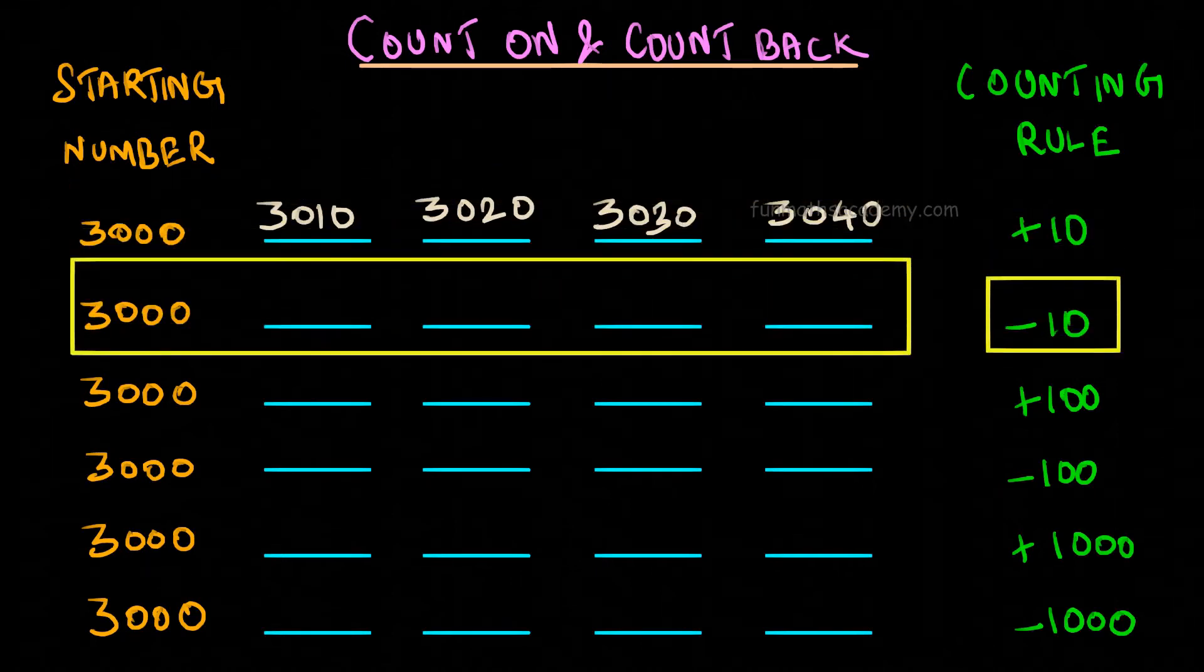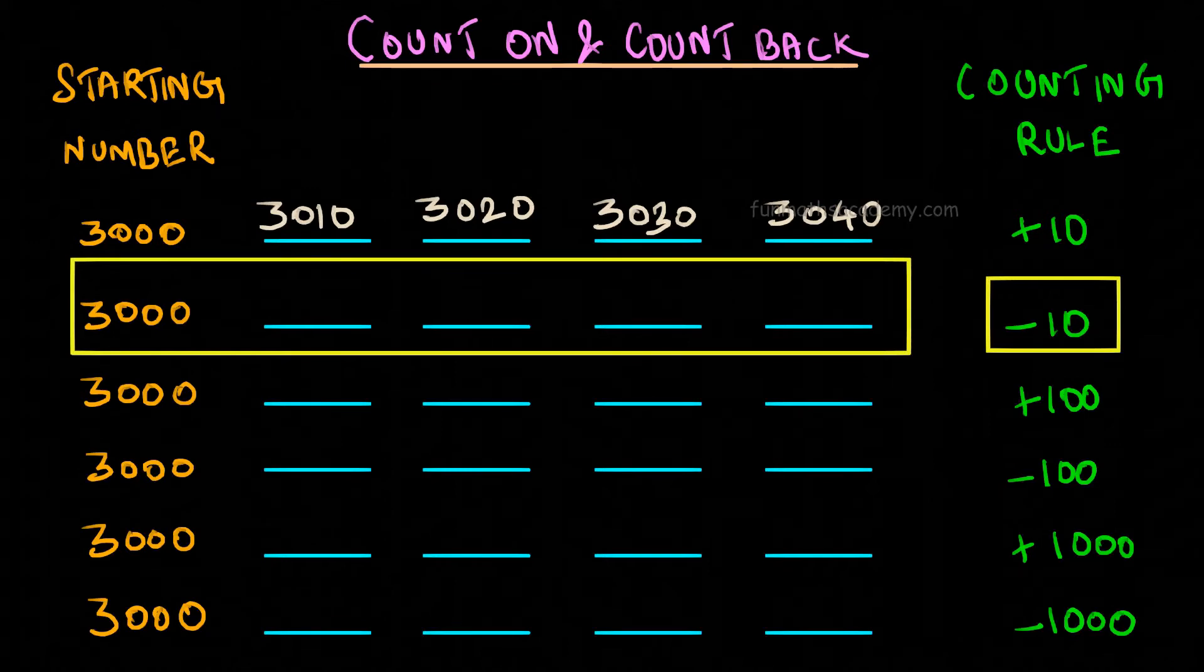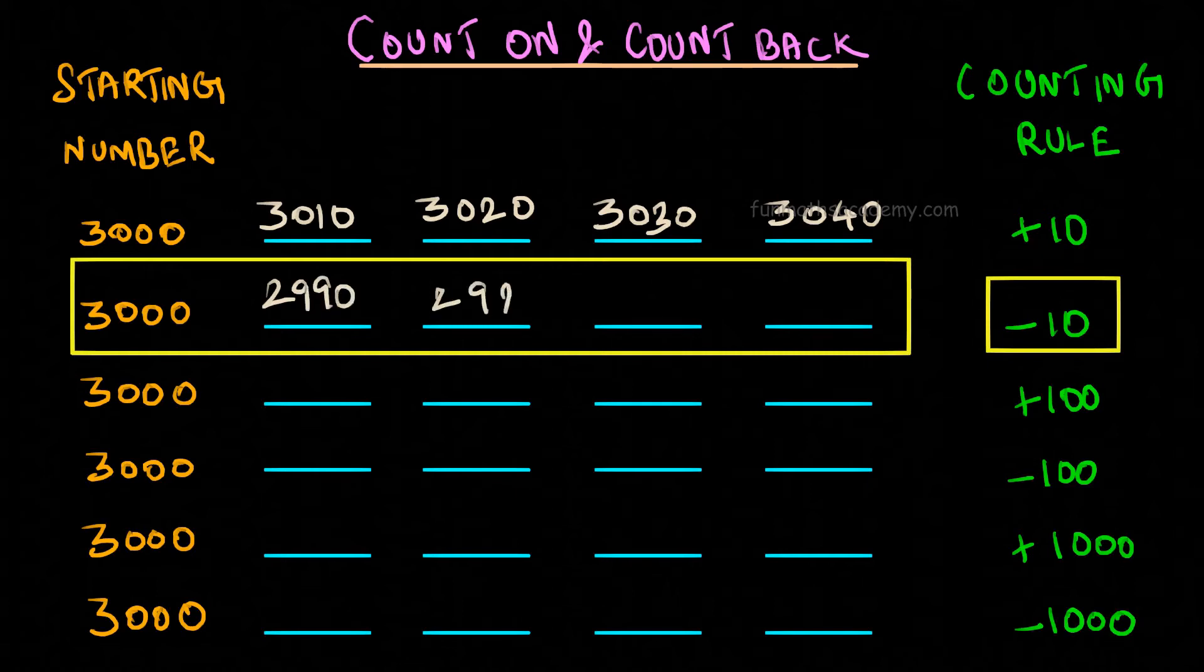When counting rule is minus 10, we will count back 10-10 numbers. That is, we will subtract 10-10 numbers from 3000. Can you guess what we will get? Yes, we will get 3000, 2990, 2980, 2970, 2960.